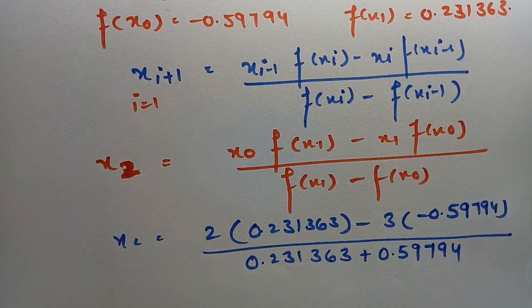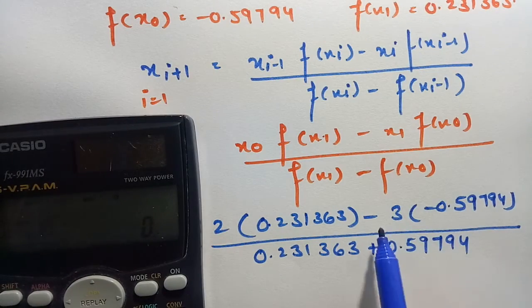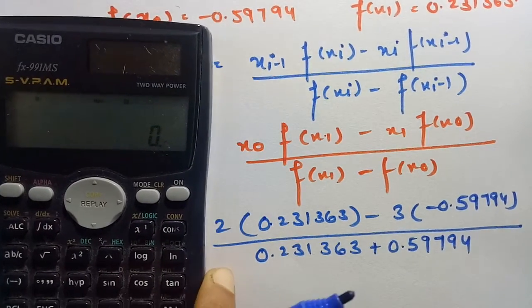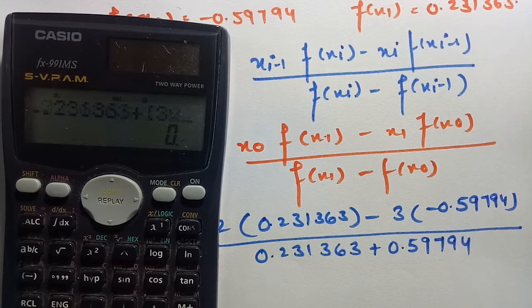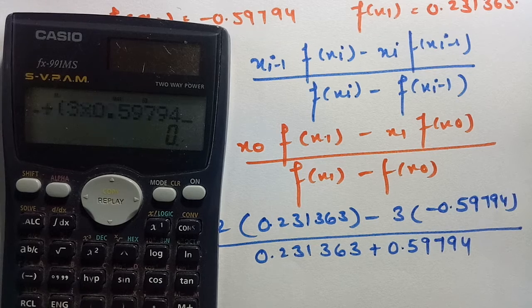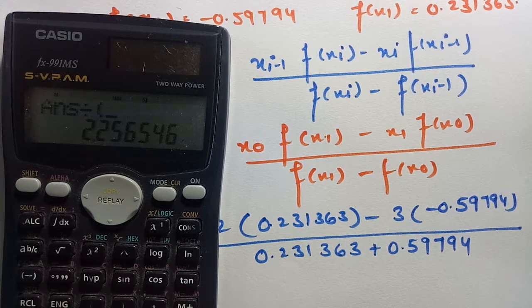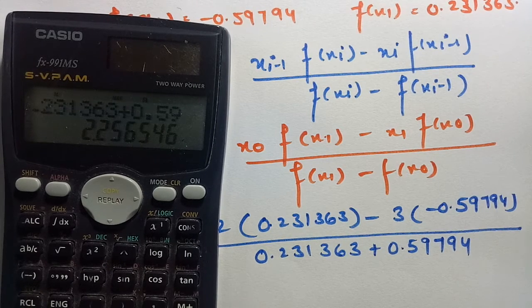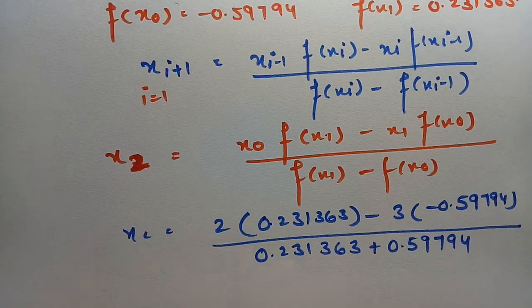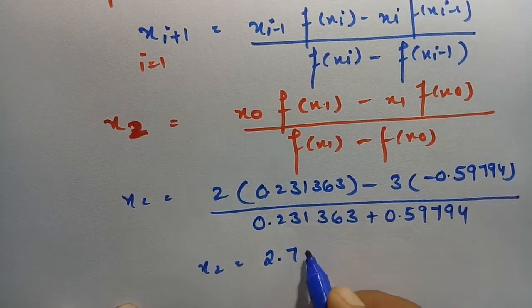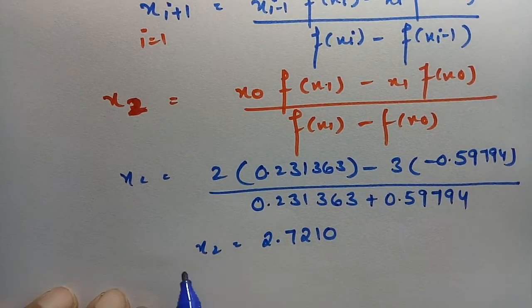Since minus times minus is plus, the numerator becomes 2 × 0.231363 + 3 × 0.59794, and the denominator is 0.231363 + 0.59794. Calculating this gives x₂ = 2.7210.